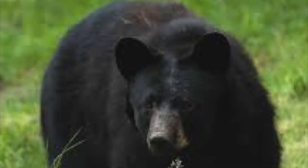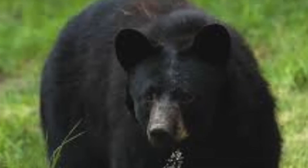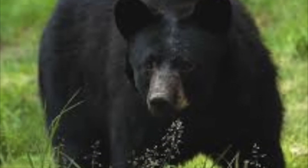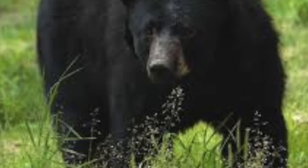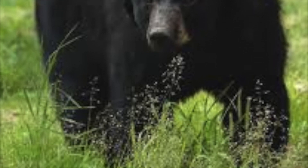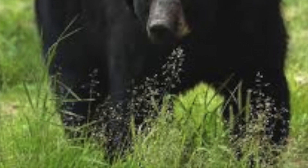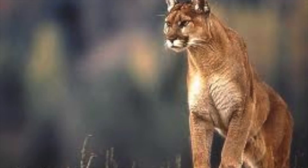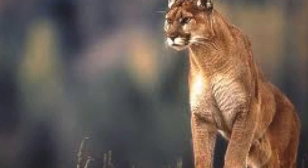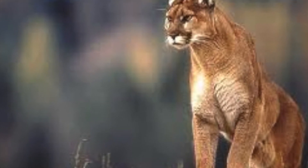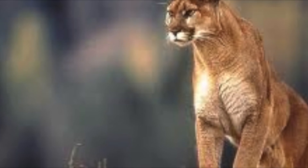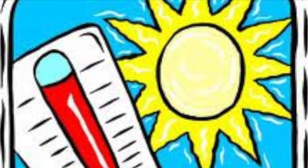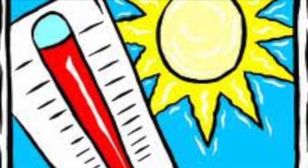The last level is tertiary consumers, which are large predators like bears and cougars. These predators only get 60 kilocalories per square meter, and they are responsible for covering a large amount of land.